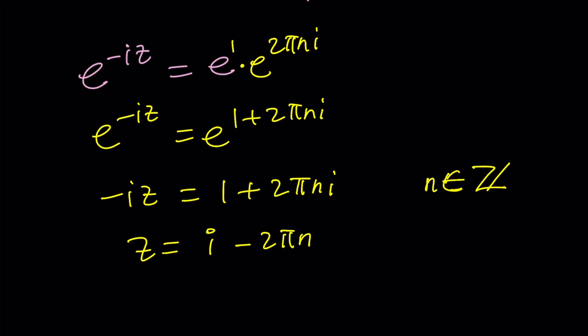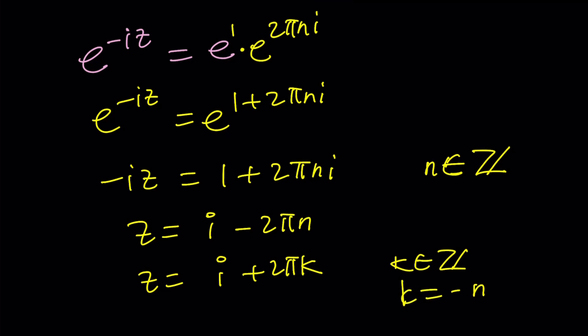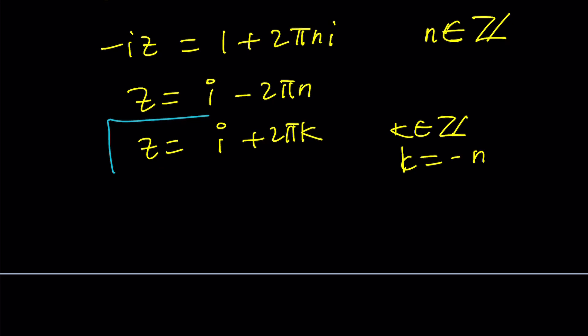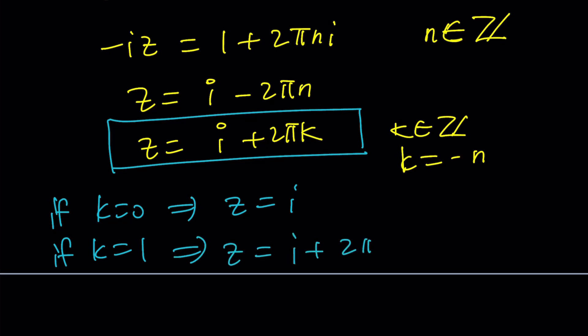Wait, n is an integer but can I just turn it into a plus sign like two pi k? Yeah you can do that as long as k is an integer and k is equal to negative n. Doesn't matter which variable you use but I like this better because of the plus sign. And obviously if k equals zero we get z equals i as before. If k equals one we get z equals i plus two pi which means two pi in this case is the period. Awesome.